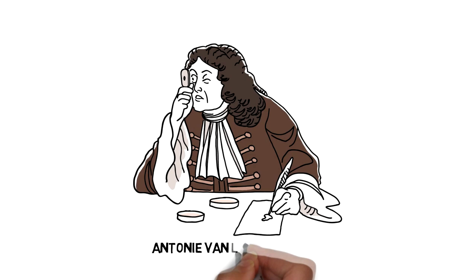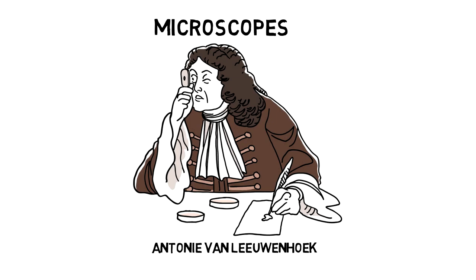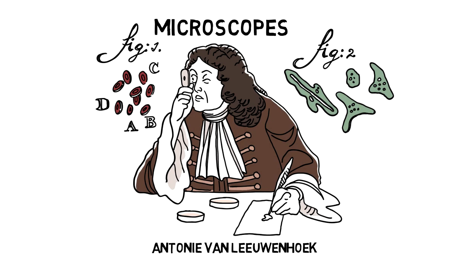About 350 years ago, a Dutch fabric merchant named Antony van Leeuwenhoek figured out how to make microscopes that could see tiny things no one had thought to look for.